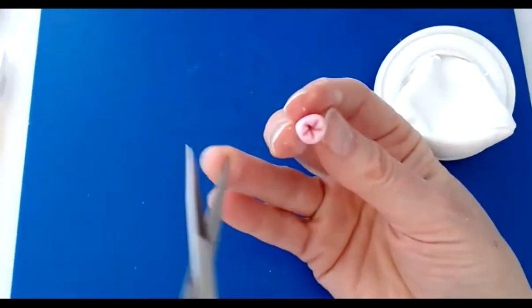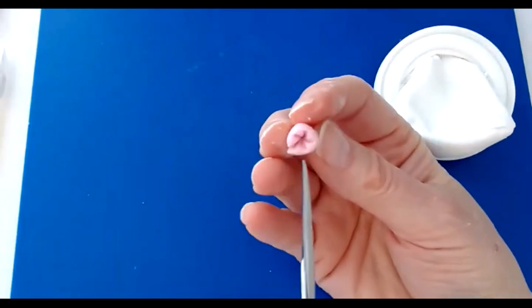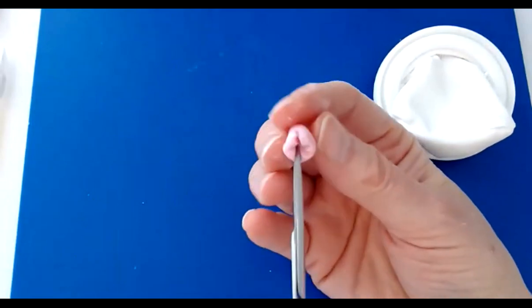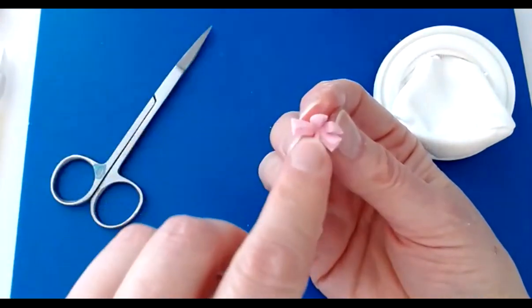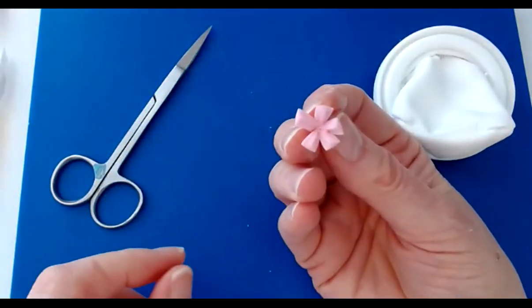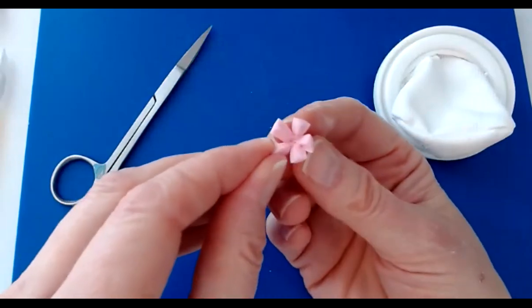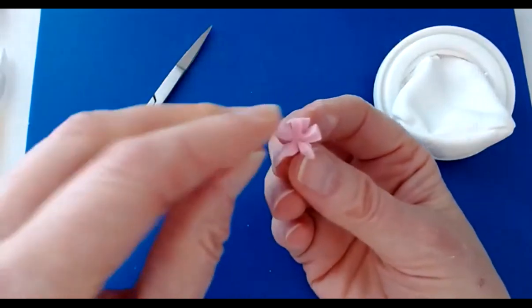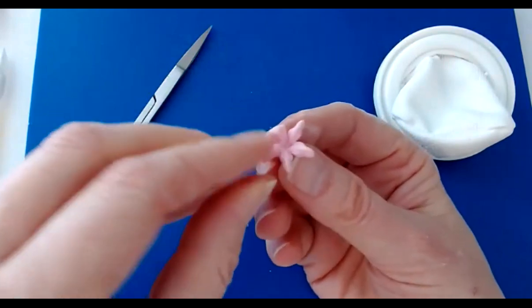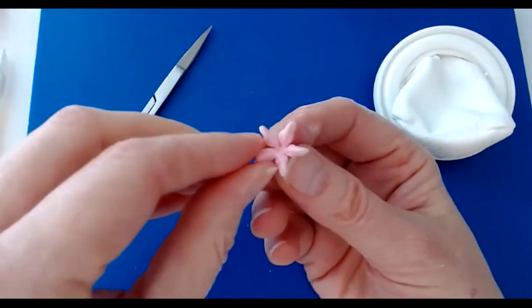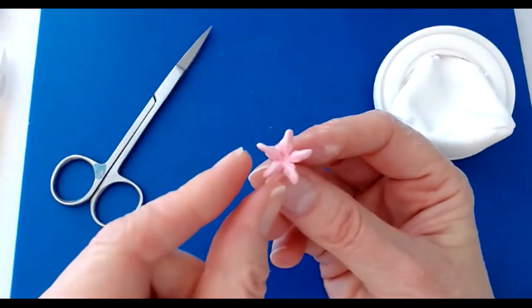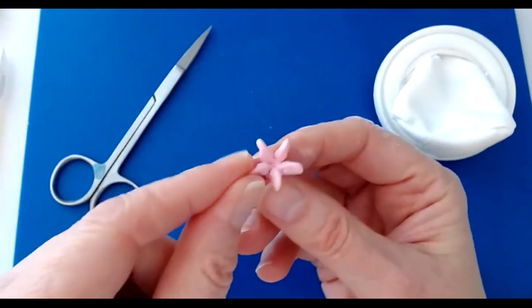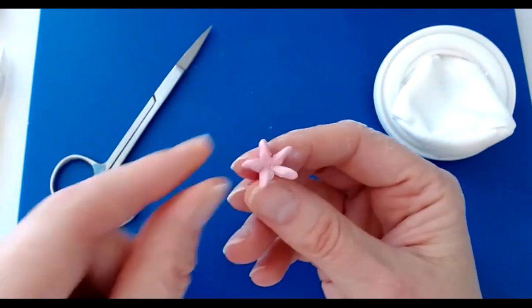Take a straight bladed pair of scissors and cut through those indentations as deeply as you have pressed in with the tool and open up the individual petals. This technique is called a pulled flower. It means that you can make different sized flowers using the same tool rather than a cutter.